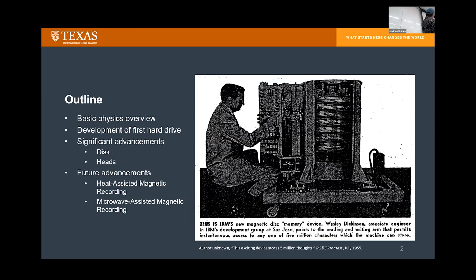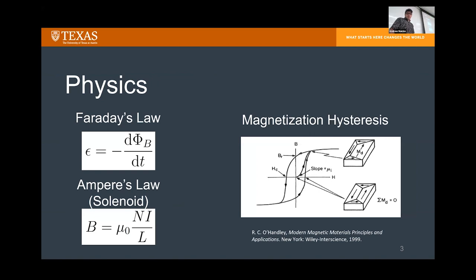You'll also notice this photo on the right — that is one of the engineers at IBM in 1952, Wes Dickinson, sitting next to the first ever hard drive. Notice that is just the hard drive component of the computer, and it is comparable in size to a fully grown man.